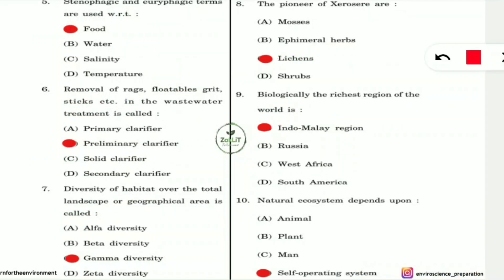Question 10: What does a natural ecosystem depend upon? It does not depend on animals, plants, or human beings. A natural ecosystem is a self-operating system driven by nature's own processes.